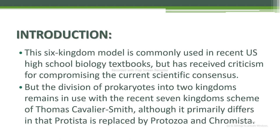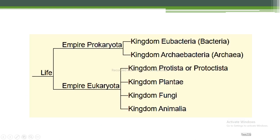This is seen in the recent seven kingdom scheme of Thomas Cavalier-Smith, although it primarily differs in that Protista is replaced by Protozoa and Chromista. So life is divided into two empires. The first empire is Prokaryota, divided into two kingdoms: the first kingdom is Eubacteria, also called Bacteria, and the second kingdom is Archaebacteria. The empire Eukaryota is divided into four kingdoms: kingdom Protista, also called Protoctista; kingdom Plantae; kingdom Fungi; and kingdom Animalia.